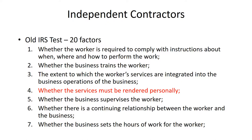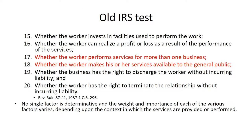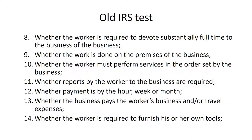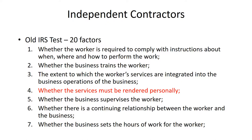The IRS has a long-standing 20-factor test for distinguishing between independent contractors and employees. Some states still follow this test. The IRS says they look at all 20 factors, and there is no single factor that is determinative — the weight and importance of each factor varies depending upon the context in which the services are performed. Essentially, it's a judgment call; it's not a matter of simply totaling factors up one way or the other.